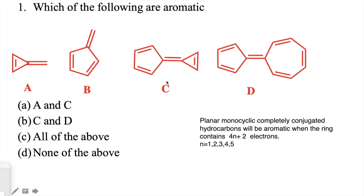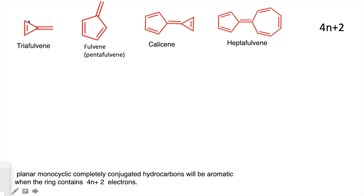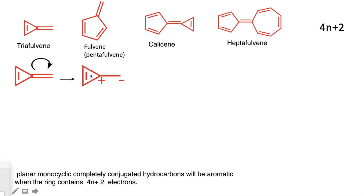Let's have a closer look at these and see which are aromatic, which are not, and which are anti-aromatic. The first one is a tricyclic ring with a double bond and an exocyclic ring — triafulvene. This molecule has a dipole moment, and electrons tend to shift toward one end, making a cation-anion pair. This electron shifting due to resonance is called dipolar resonance. This part of the molecule becomes aromatic with two pi electrons, making the full molecule aromatic.